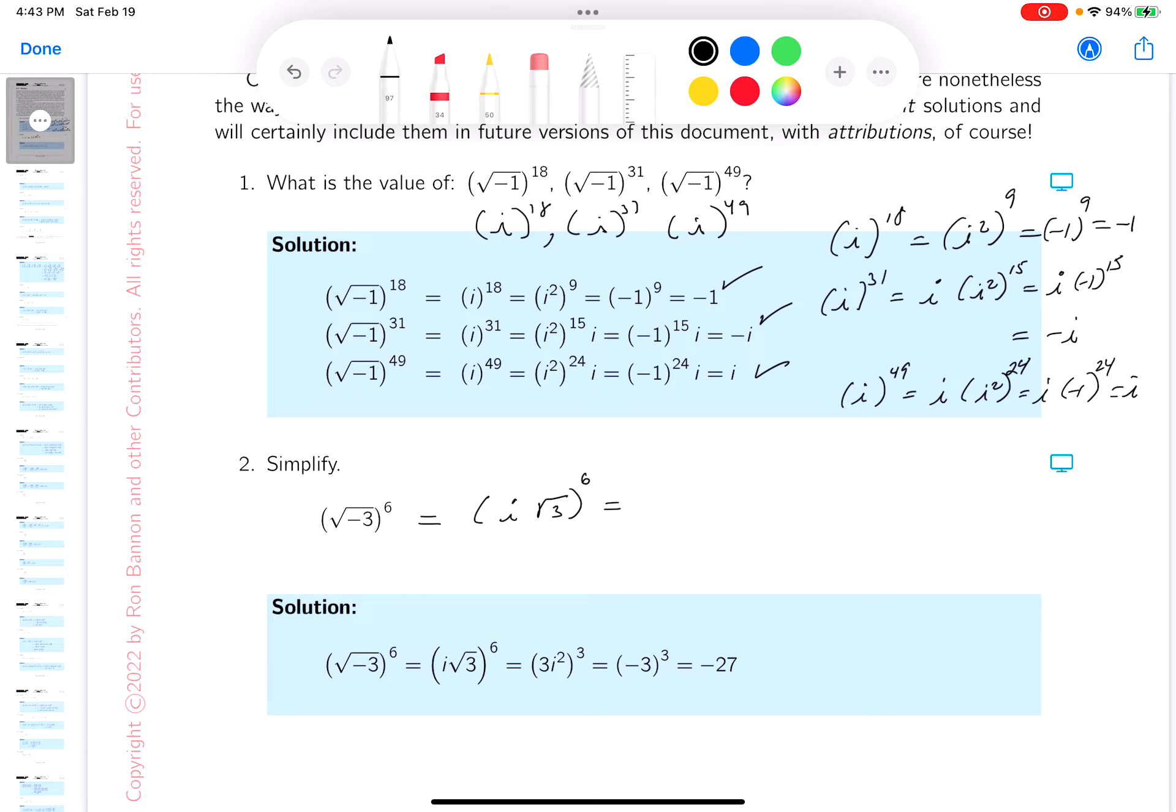So I'm seeing i to the 6th and I'm seeing root 3 to the 6th. Well, I'm going to say this is really just i squared cubed. And 3 to the 6th power is going to be 3 to the 3rd power.